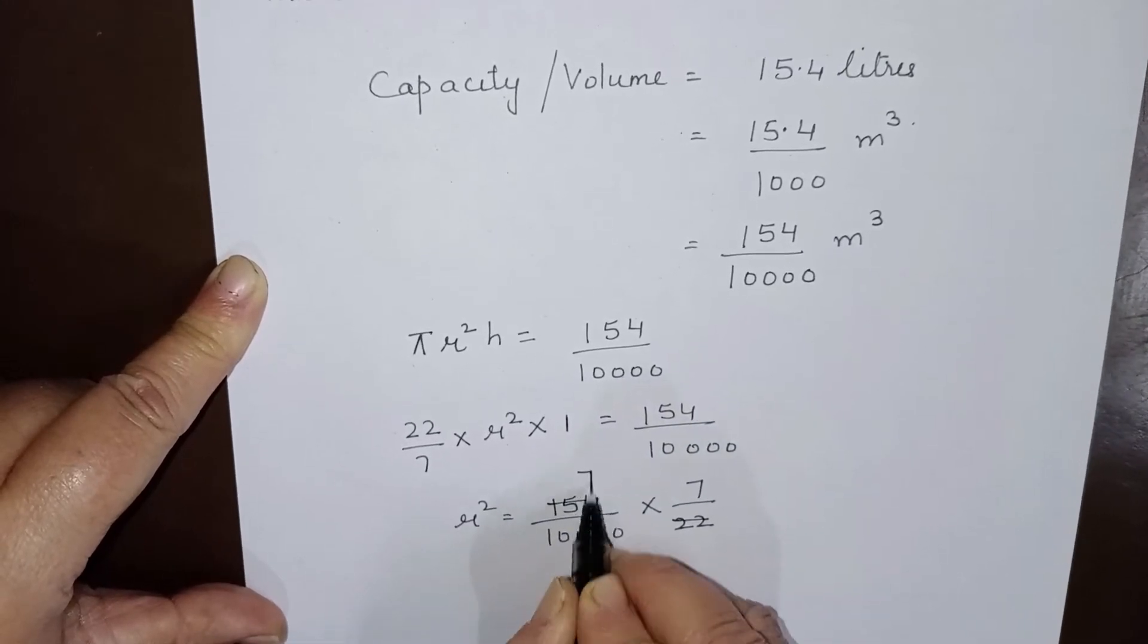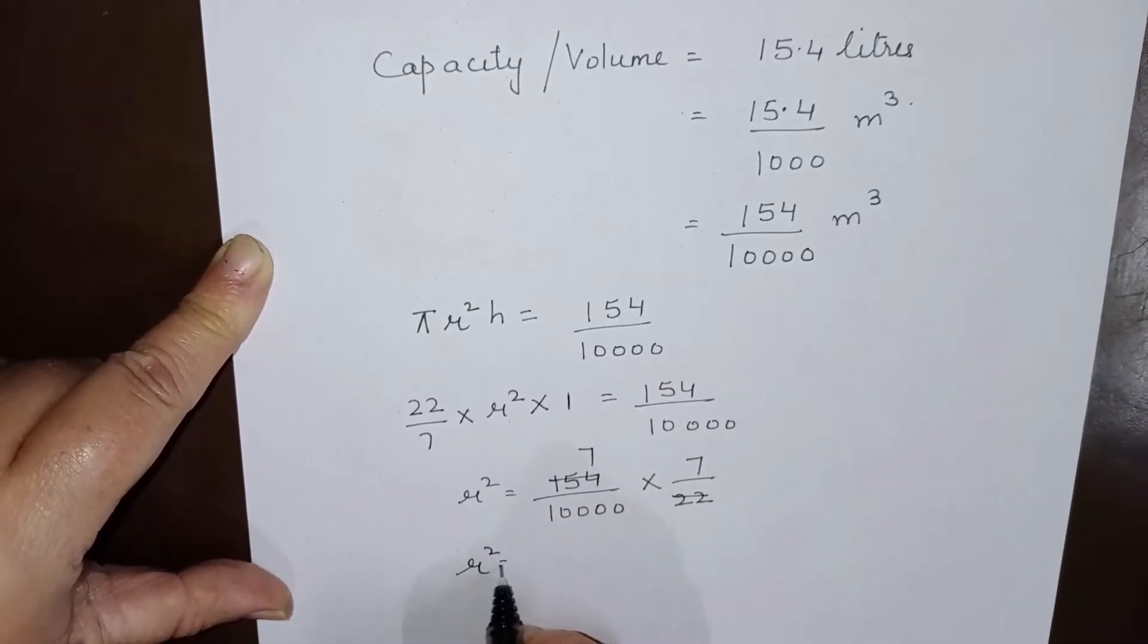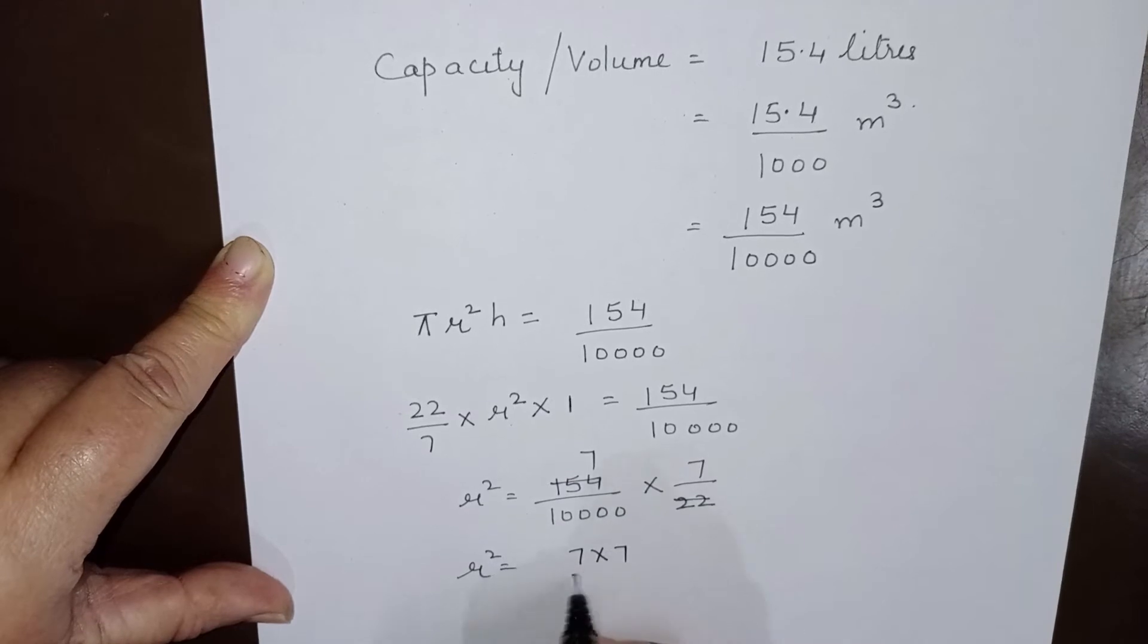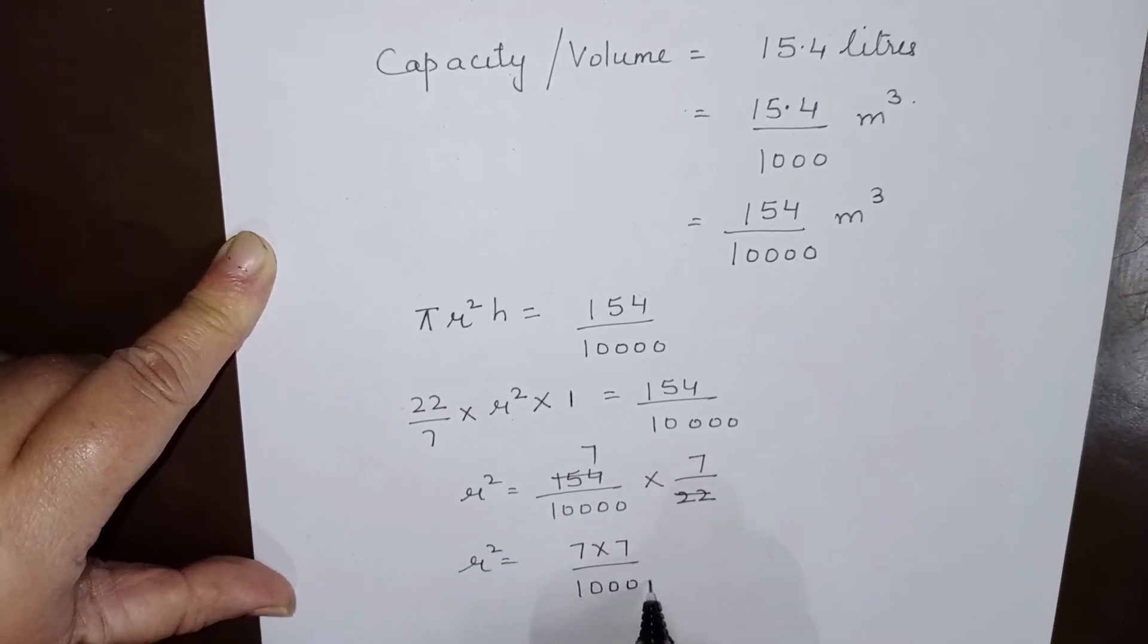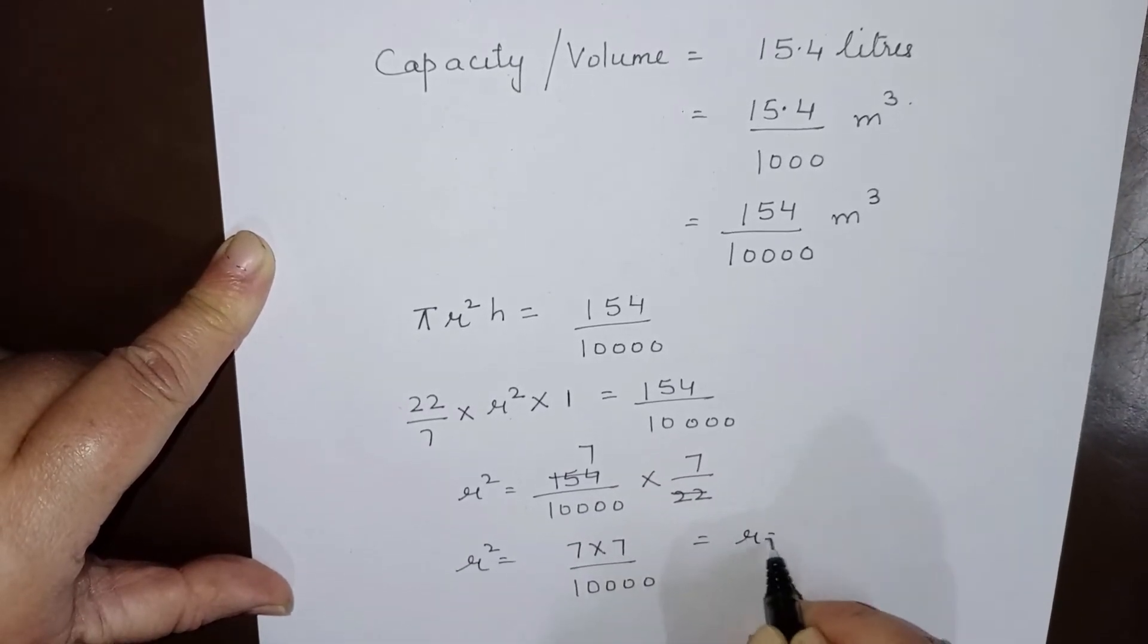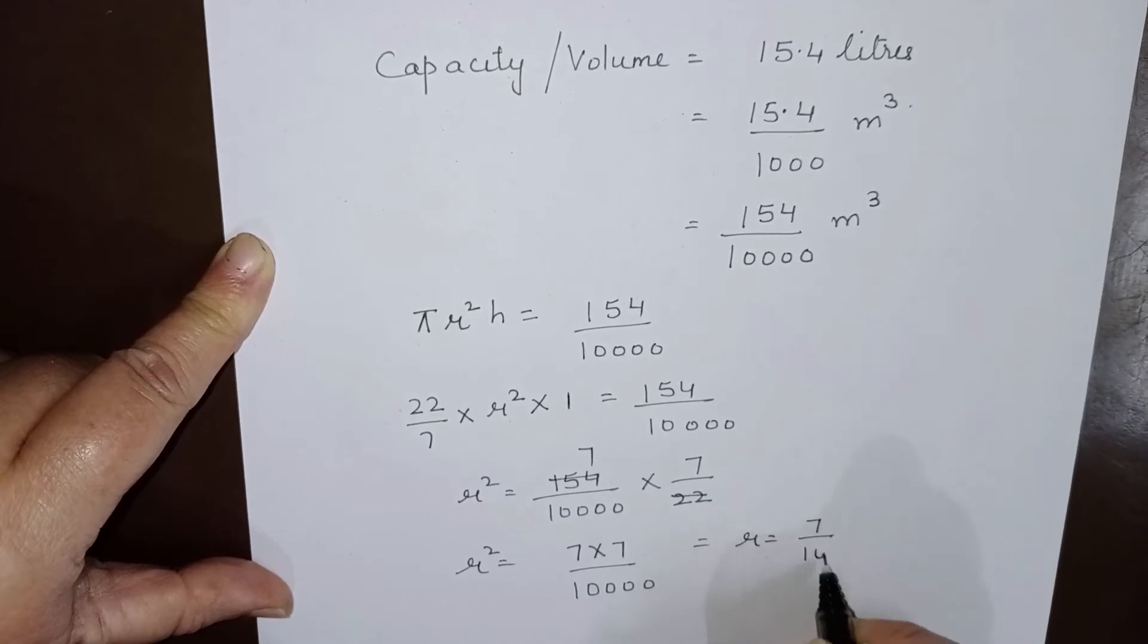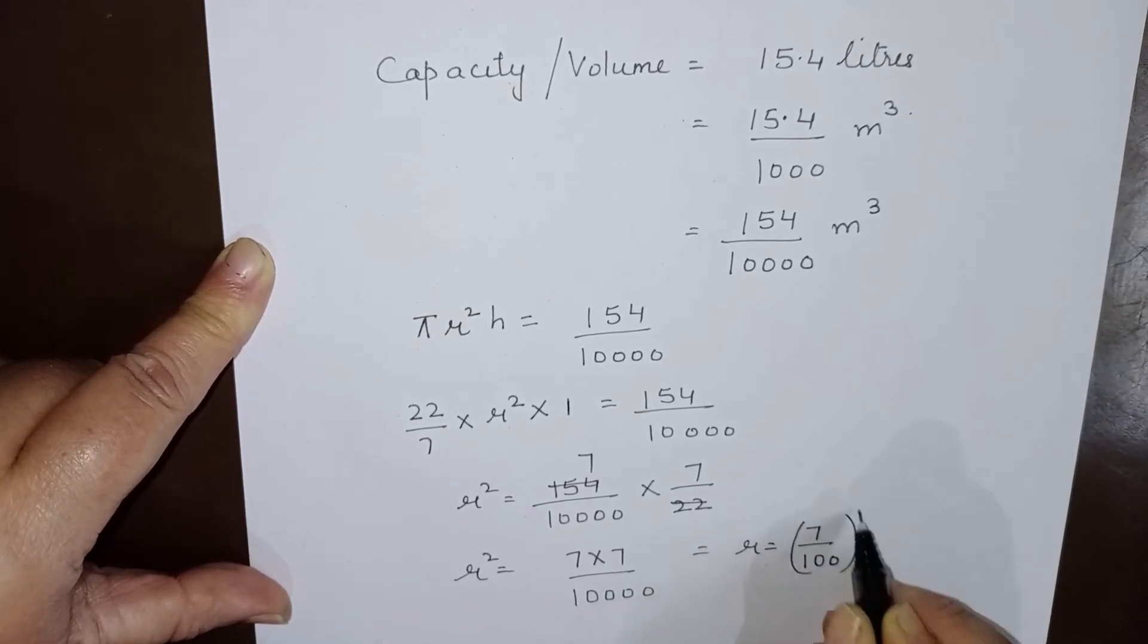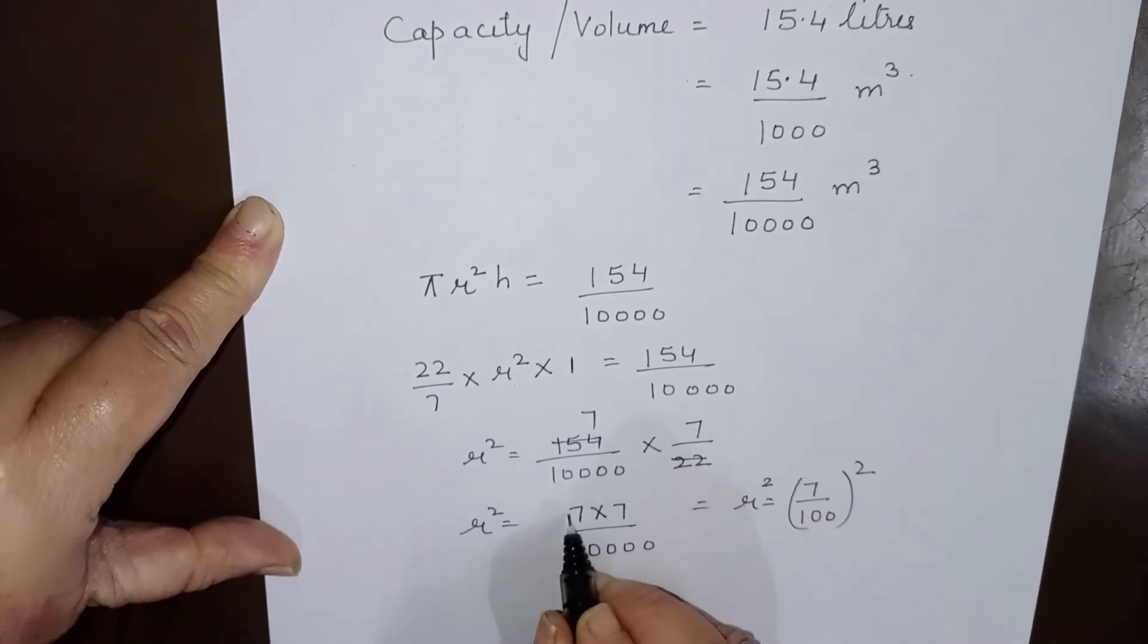Now this is 7, so r² will be 7 times 7 over 10,000. We can write this as (7/100) whole squared.